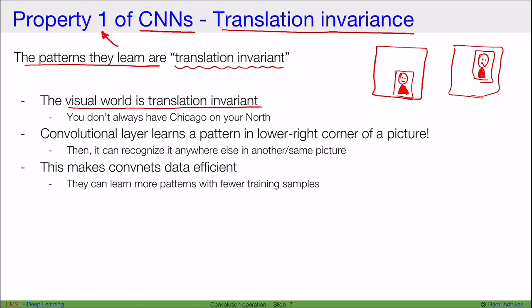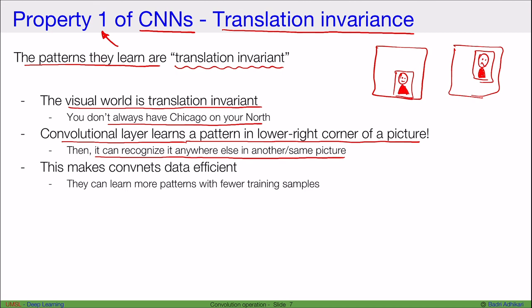The visual world is also translation invariant — for example, you don't always have Chicago to your north; it depends on how you are oriented. So a convolutional layer that learns a pattern in the lower-left corner of a picture can recognize it anywhere else in the same or another picture.